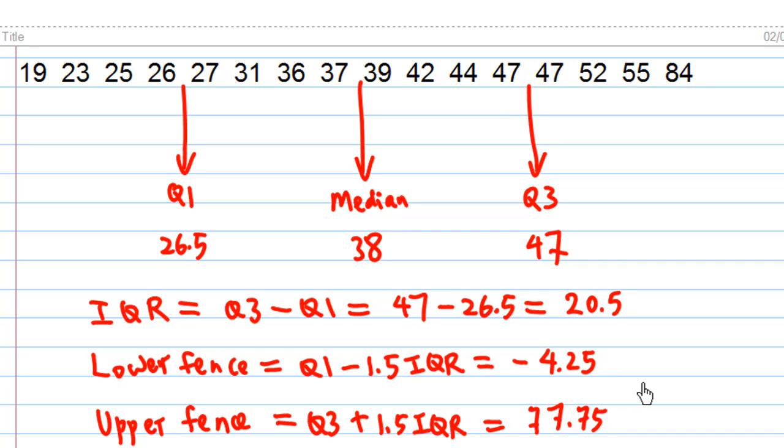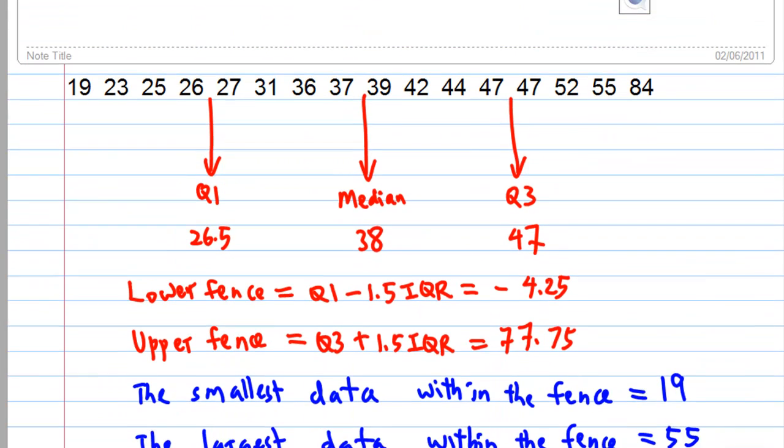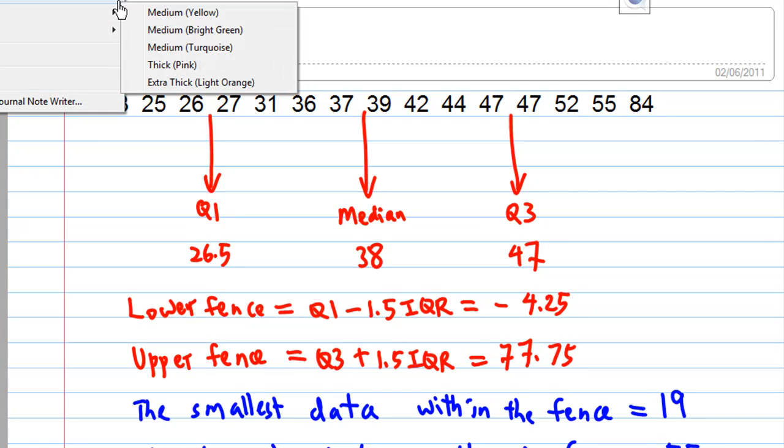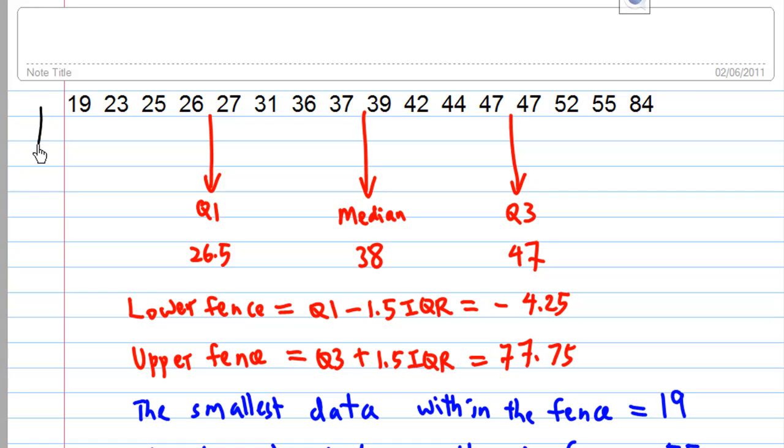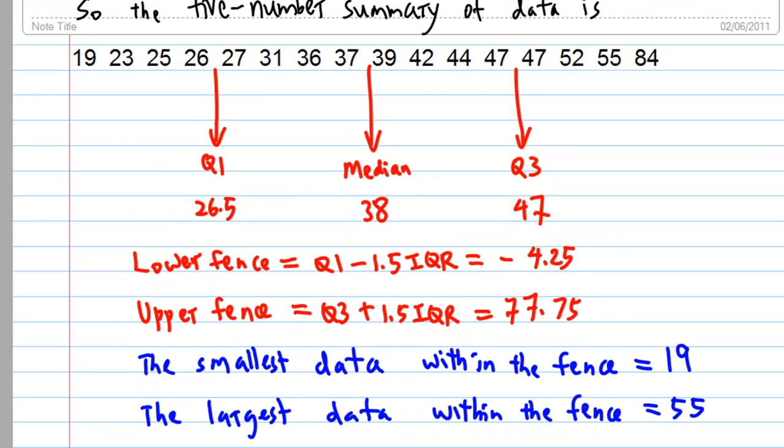Now we mark where are these lower fence and upper fence on the data. The lower fence we found is minus 4.25, somewhere here. And the upper fence is 77.75, somewhere here. Then we find that the smallest number within the fence is 19, and the largest number within the fence is 55.